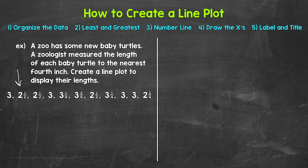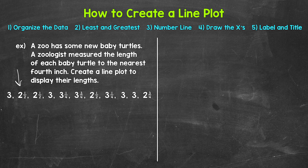Here are the lengths of the baby turtles to the nearest fourth inch. When creating a line plot, the first thing we may need to do is organize the data — the numbers we are working with. You may be working with data that is already organized, maybe in a table, ordered from least to greatest. If your data is already organized, then you can skip this step. For this example, the data isn't organized — we just have a list of numbers in no particular order. So our first step: we need to organize the data.